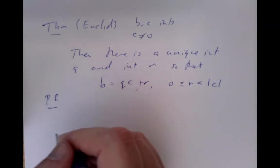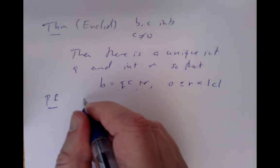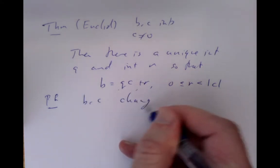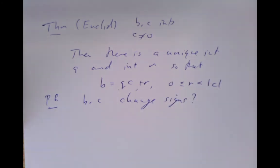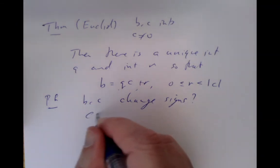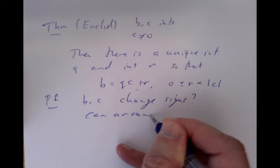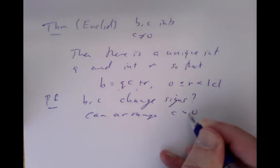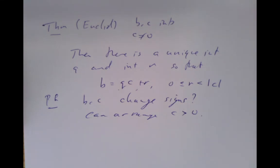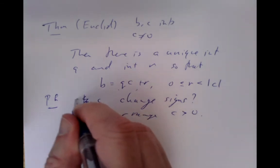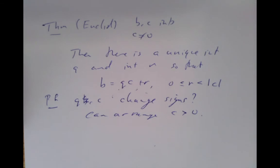For the proof, we can always change signs if needed, so we can arrange that c is positive. If c is negative, you'd change the sign of q and c together to make it work — I'll leave you to fill in those details. So how do we deal with the case where c is positive? We consider the set of all integers of the form b minus q times c, where we can pick any integer q.